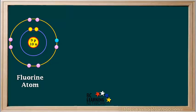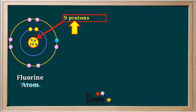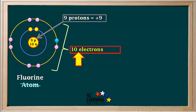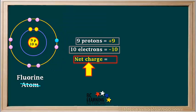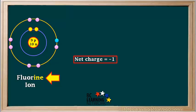Now we'll consider the fluorine on the left. Because it gained an electron, it can no longer be considered an atom. We see it has nine protons, which supply a charge of positive nine. It gained the blue electron from the magnesium atom, so counting all the electrons, you'll see that there are ten. Ten electrons supply a charge of negative ten. So the net charge is positive nine and negative ten, which is equal to negative one. Because it gained an electron and now has a net charge, it can't be called an atom anymore — instead, it's called an ion. When nonmetals form negative ions, the INE ending is removed and replaced by the ending IDE. So now it's called a fluoride ion.